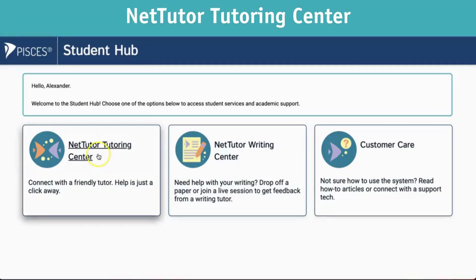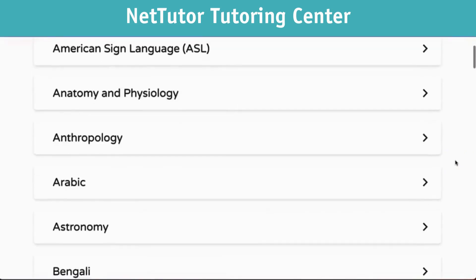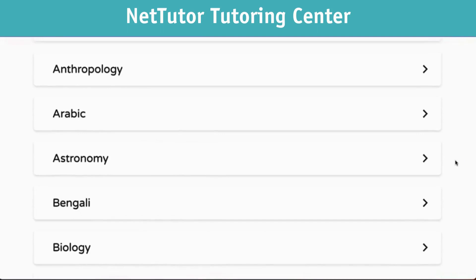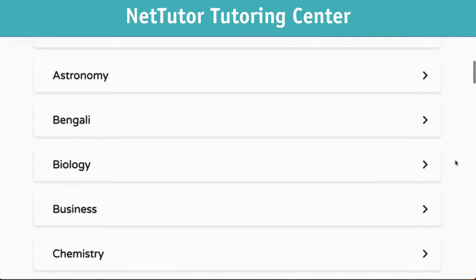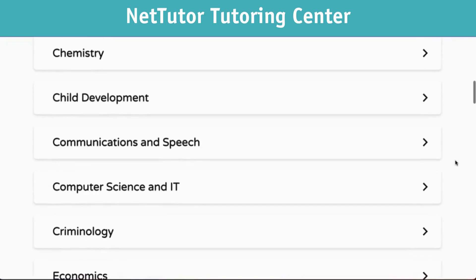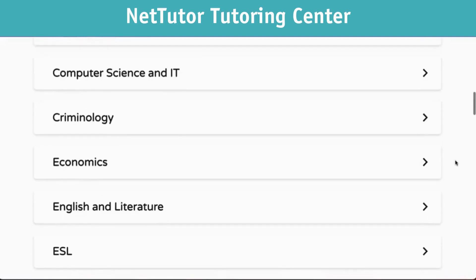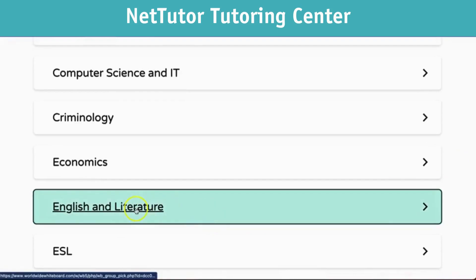We'll take a look at the NetTutor Tutoring Center link first. This takes you to a list of course offerings in alphabetical order. If you're looking for a specific class or subject, this is how you'll find it. It's a nice way to organize which classes go where and what subjects you might need help in. For today's example, we'll be using English and Literature.